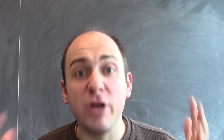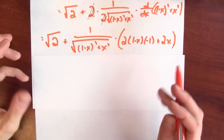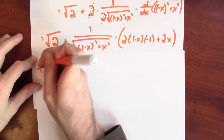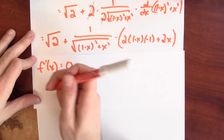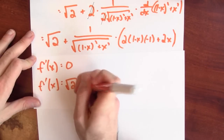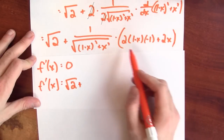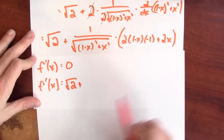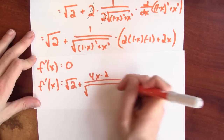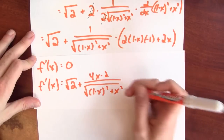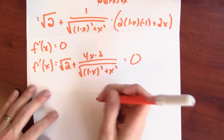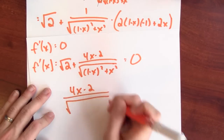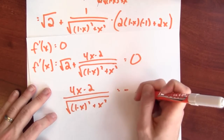With the derivative in hand, we can look for the critical points — places where the derivative equals zero (the function is differentiable everywhere, so we don't need to worry about non-differentiable points). Let me rewrite f prime more cleanly: it's the square root of 2 plus (4x − 2) divided by the square root of (1−x)² + x². I'm looking for values of x where that equals zero, so I subtract the square root of 2 from both sides: (4x − 2) over the square root of (1−x)² + x² equals negative the square root of 2.